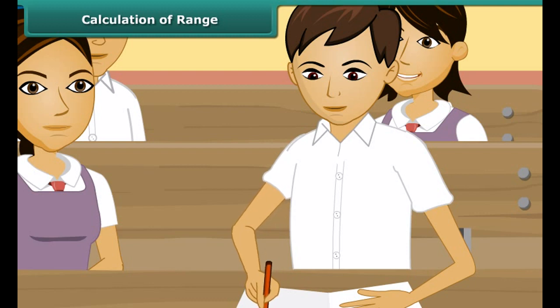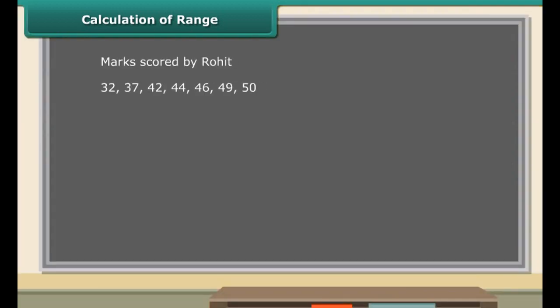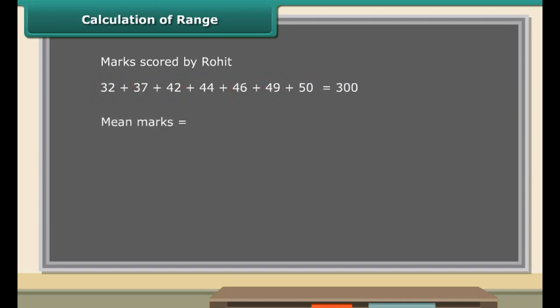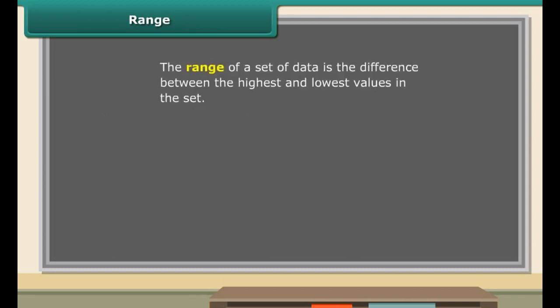Therefore, the mean of the above numbers is 12. Rohit is an intelligent and very studious boy in the class. He gave his maths test 7 times to improve his marks. The data shown here displays the marks scored by Rohit. Can you calculate the mean test marks of Rohit? Let us first add up the marks — the sum is 300. We know he gave the maths test 7 times, so the mean marks of Rohit are equal to 300 divided by 7, which is equal to 42.86.